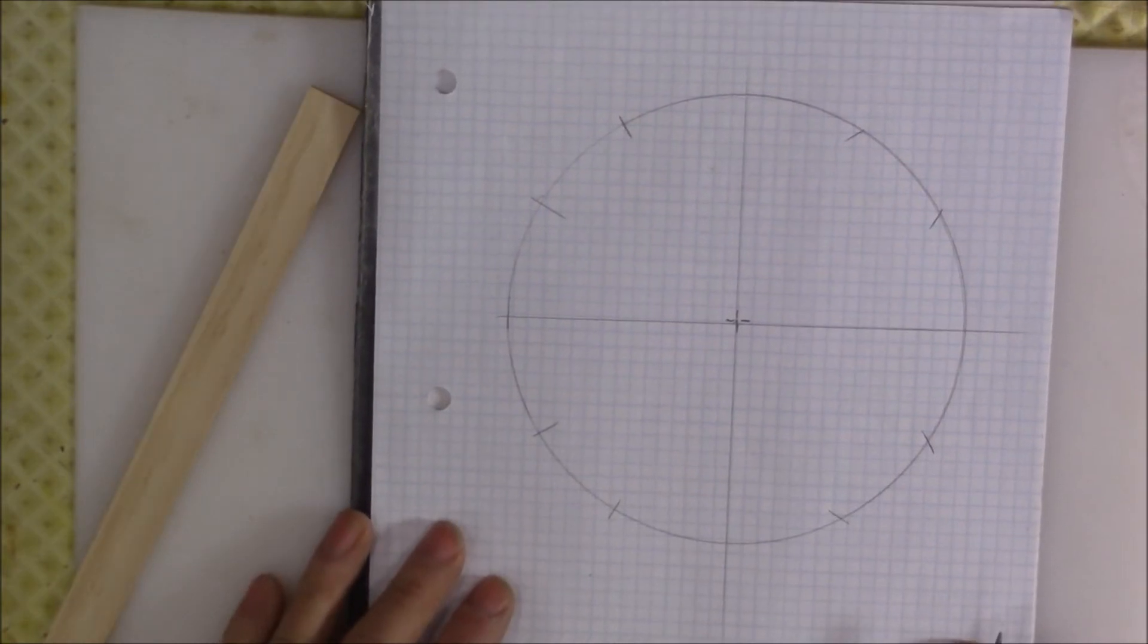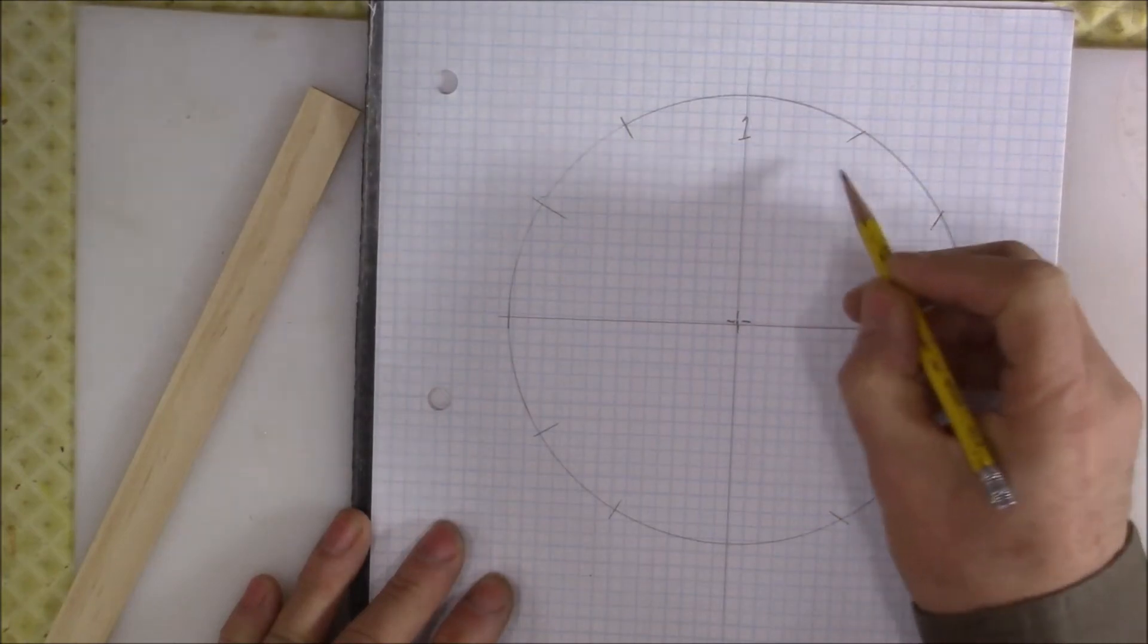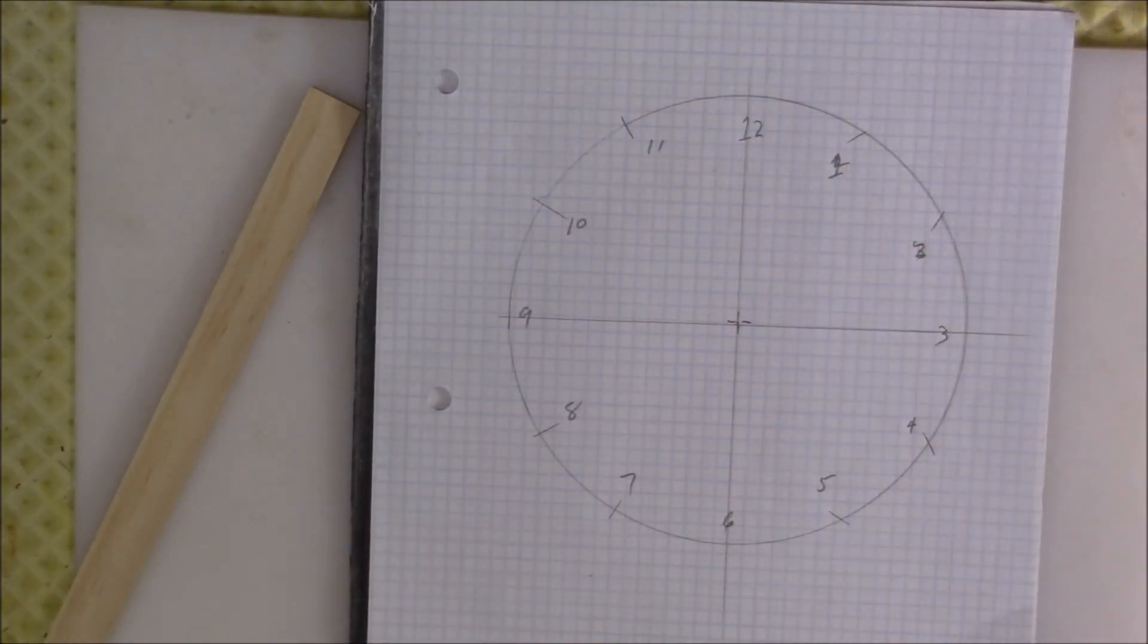So now we have our 12 places for our clock. That's how you divide a circle into 12 pieces.